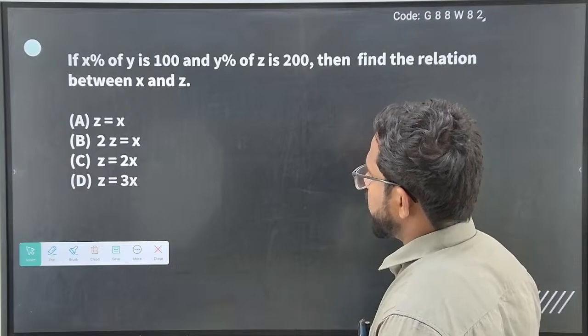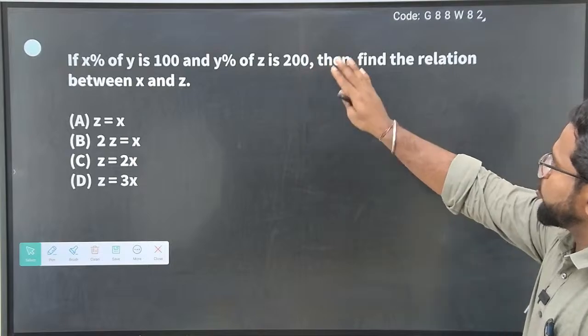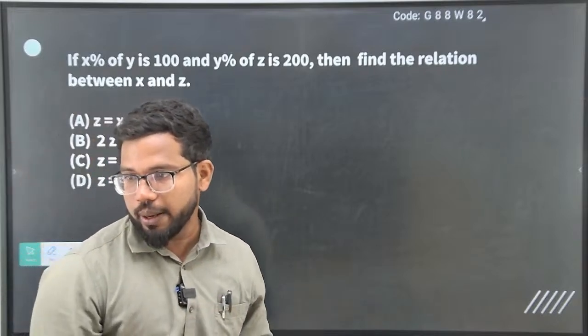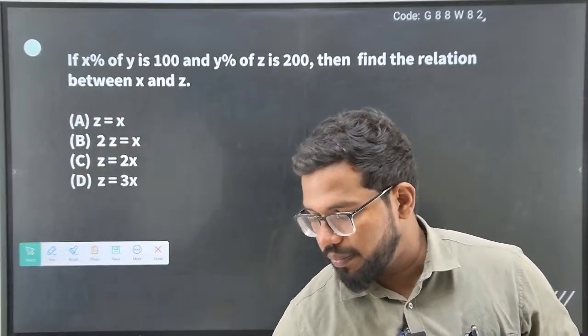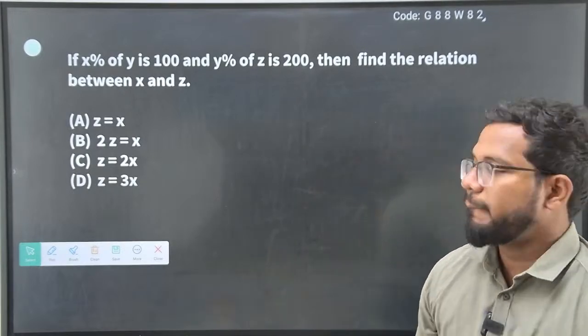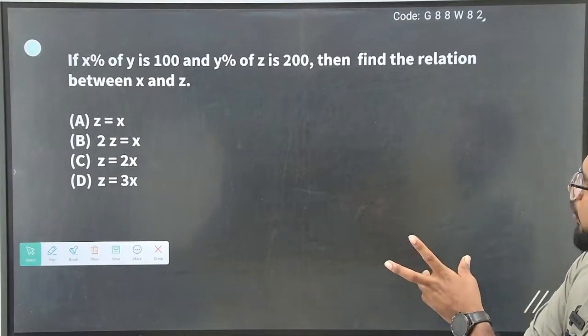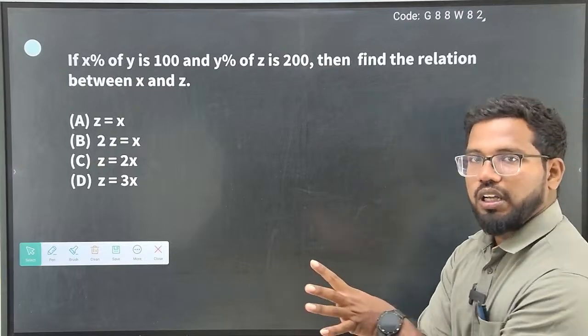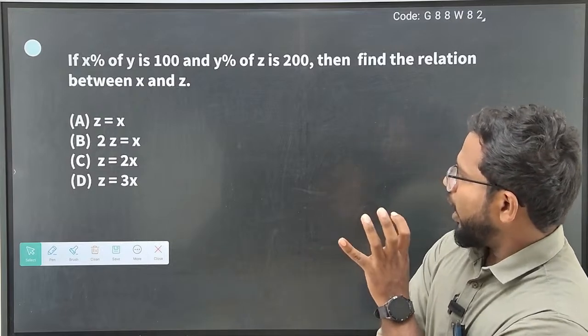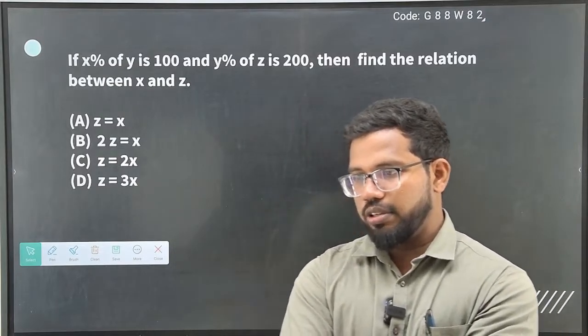Okay yes, question two. If x percentage of y is hundred and y percentage of z is two hundred, then find the relation between x and z. Yes, it is two hundred. Okay. X percentage of Y is 100. So individually, write down each equation separately, and then find the relation between the two equations. Either usually divide the equations. That is a common suggestion. So, give a try.